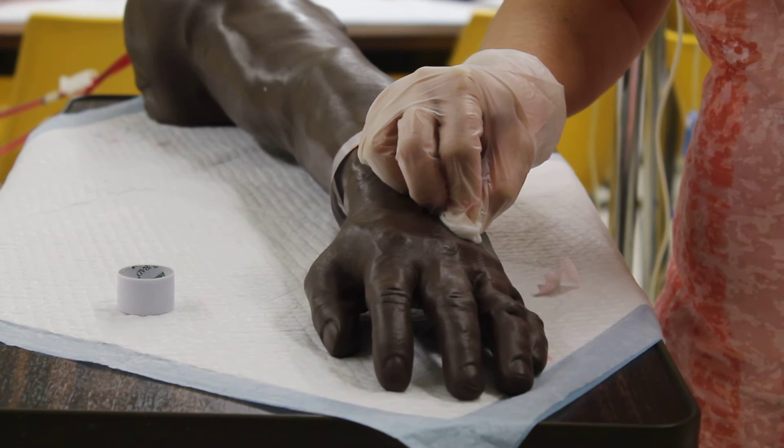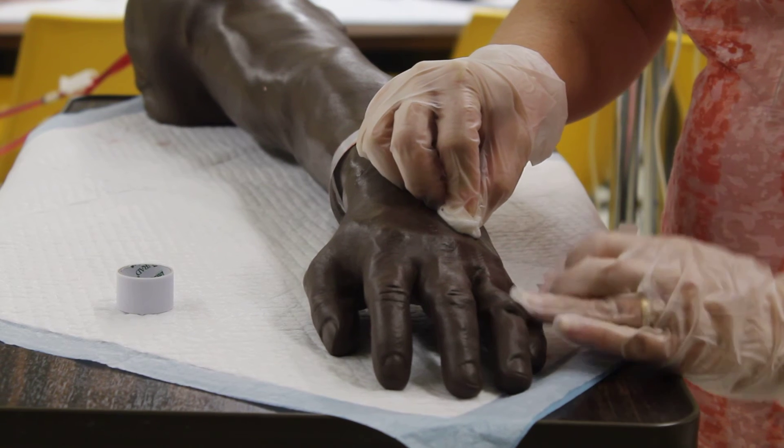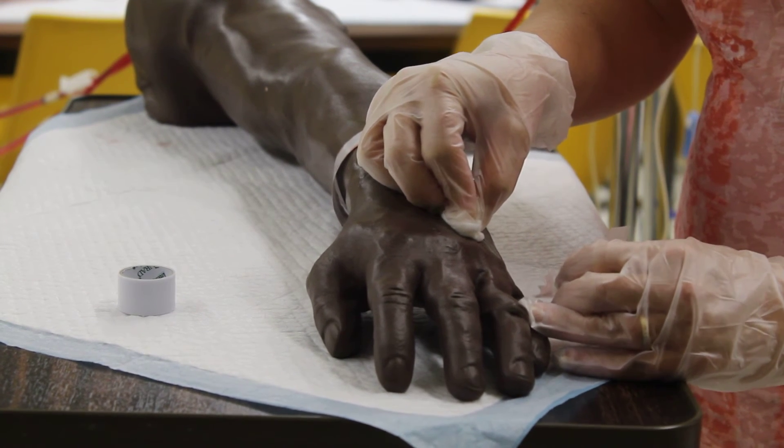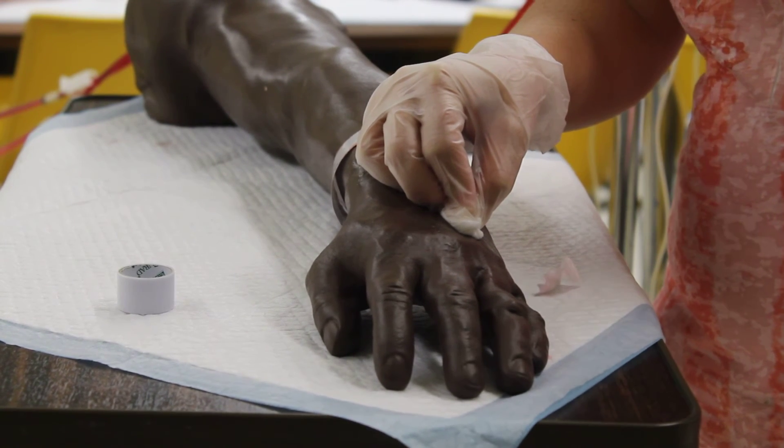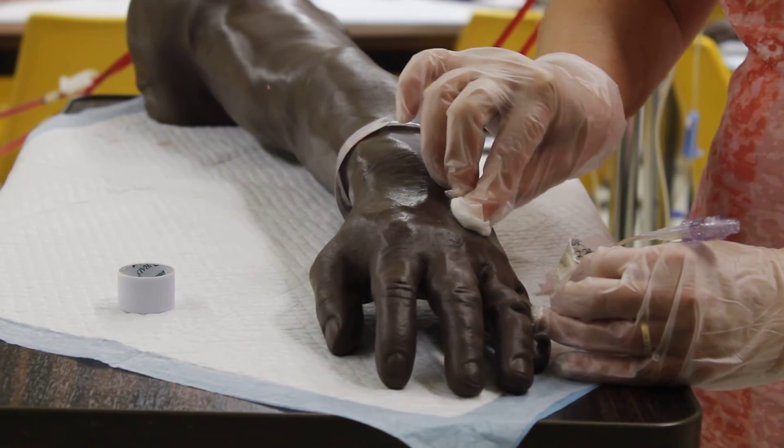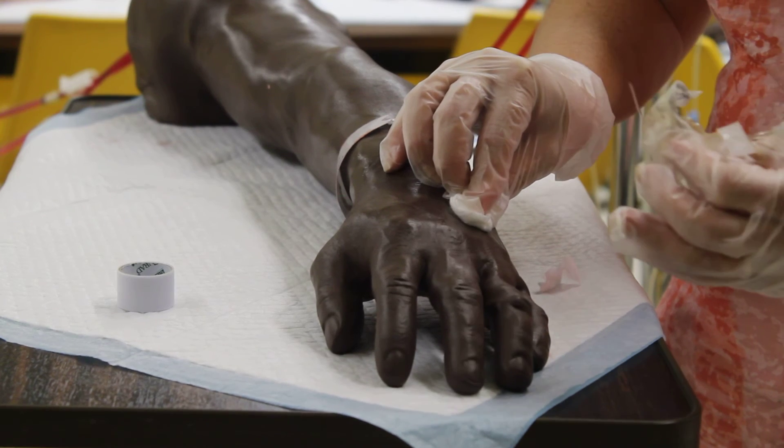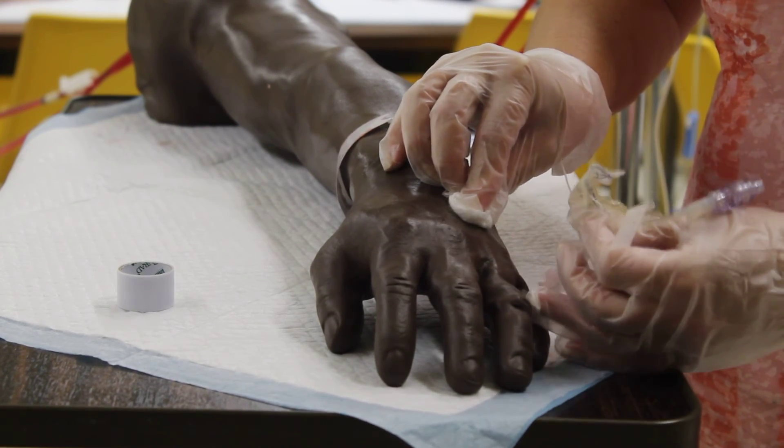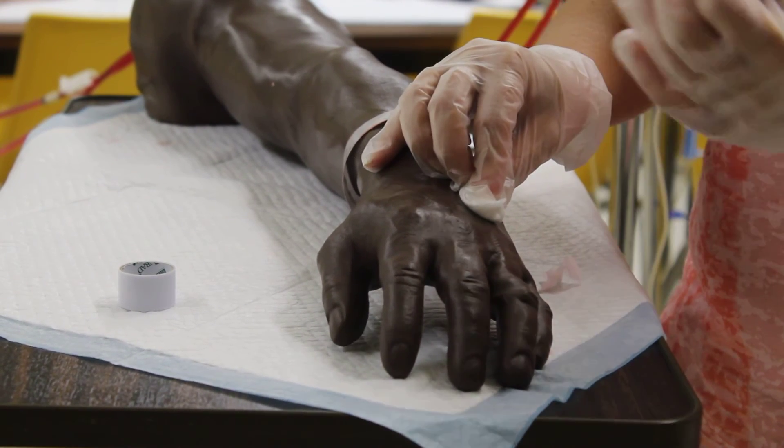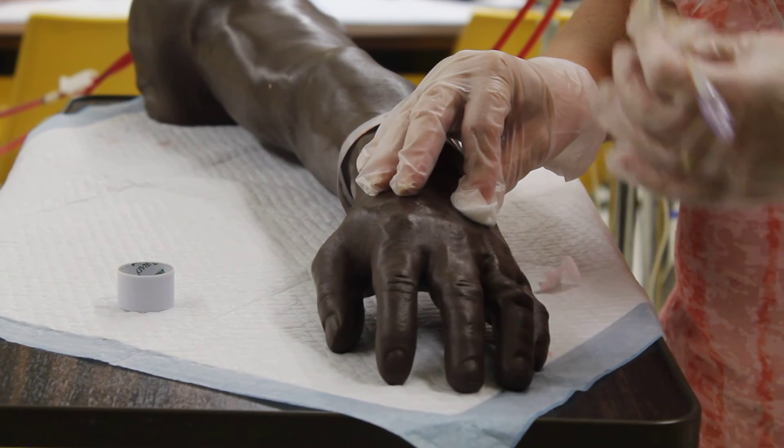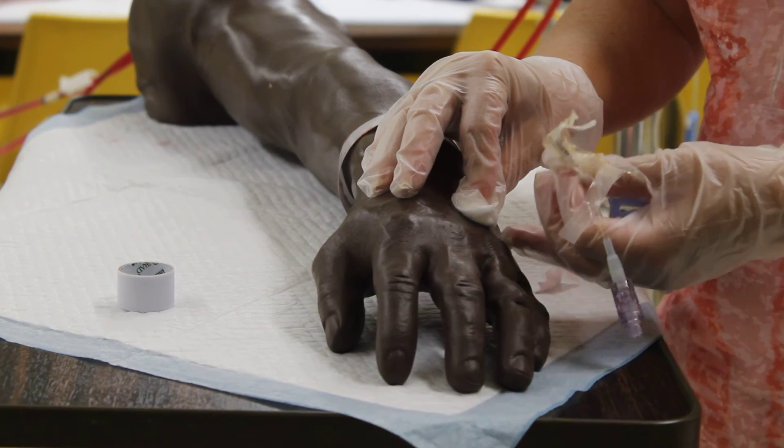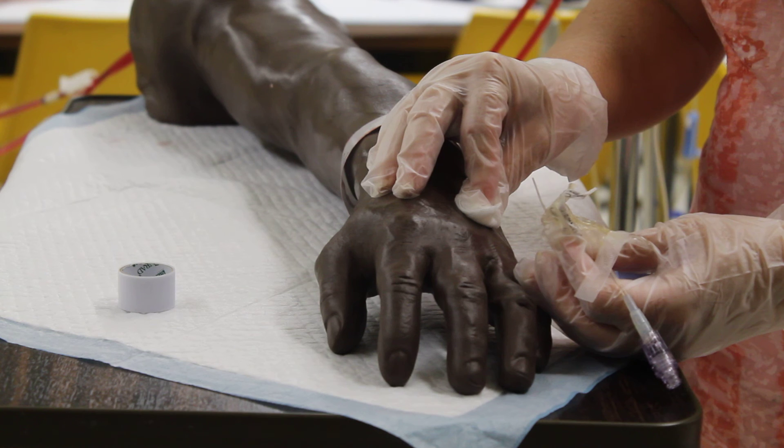Once you have done that and the catheter is intact, document the procedure. Document that the catheter is intact, how your patient tolerated the procedure, the skin integrity and how long you applied pressure, if there was any bruising, excessive bleeding, what you educated your patient on, and whether or not you put a bandaid on.